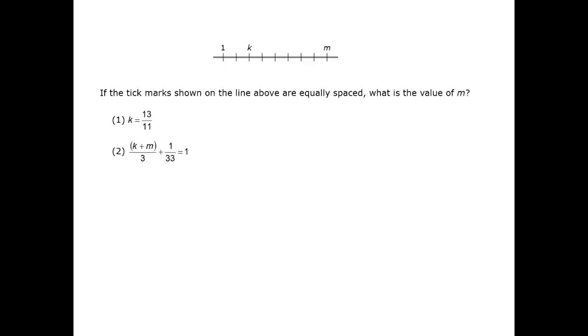In this question, the phrase equally spaced indicates that the tick marks could represent integer spaces, but they might not. The key to getting m is going to involve figuring out the width between two tick marks.